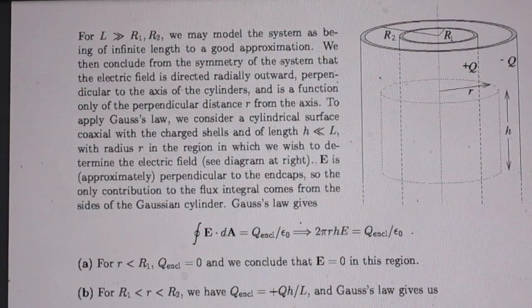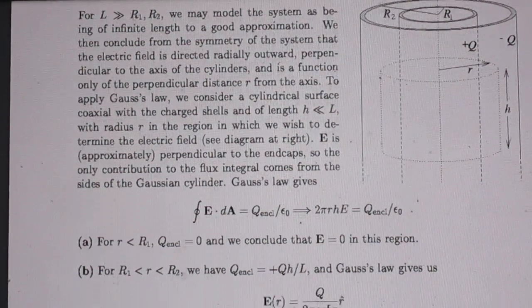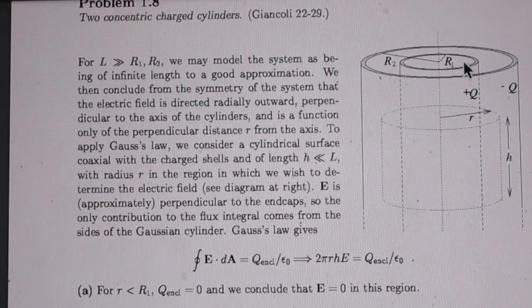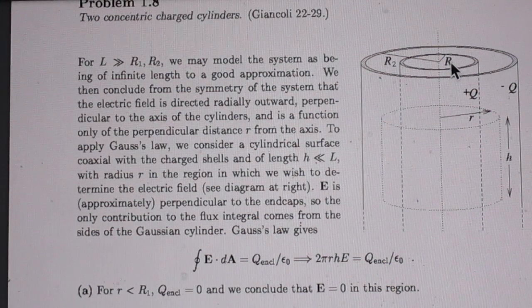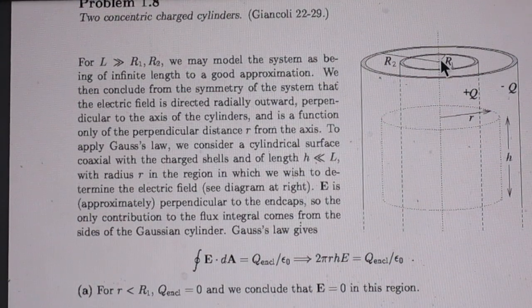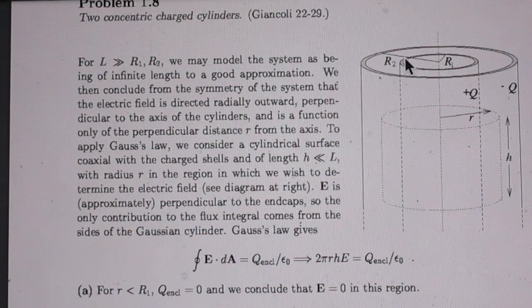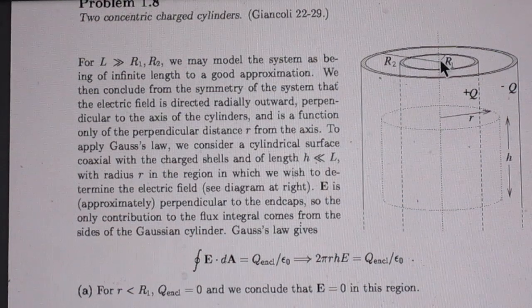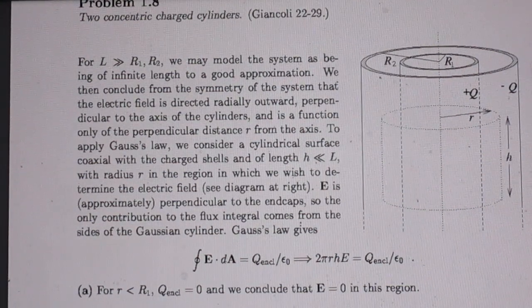And we are now being asked what the E-fields are when small r is smaller than R1, when small r is between R1 and R2, and when small r is outside the two cylinders.